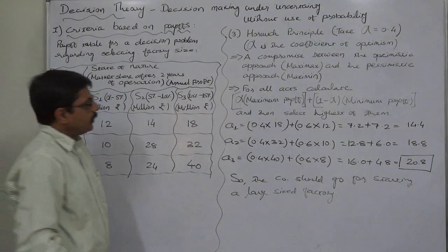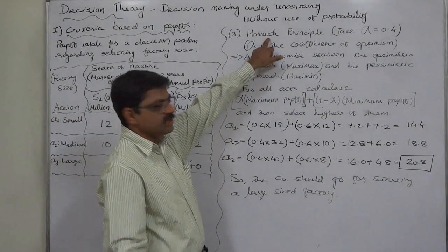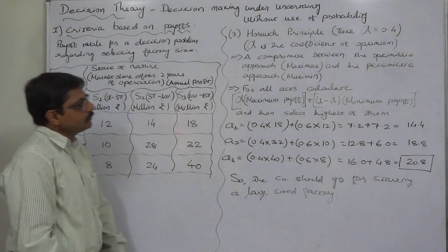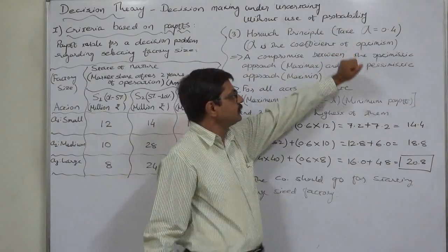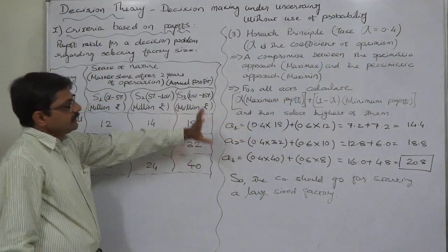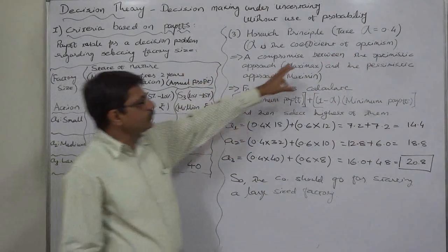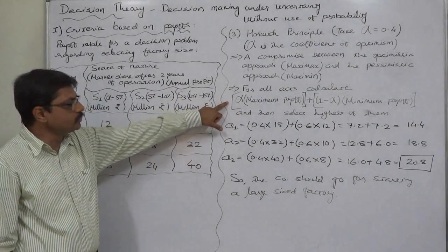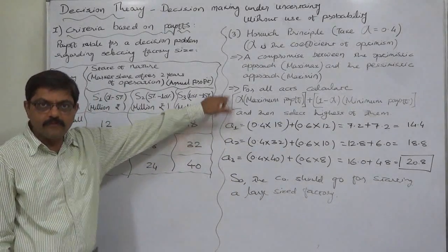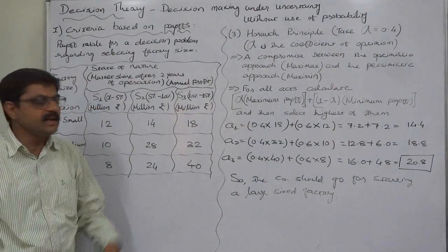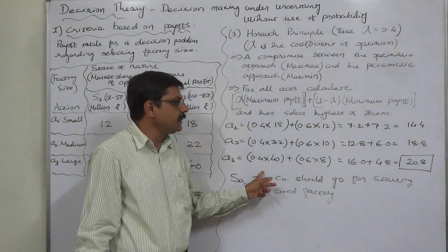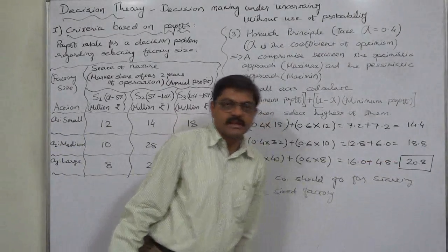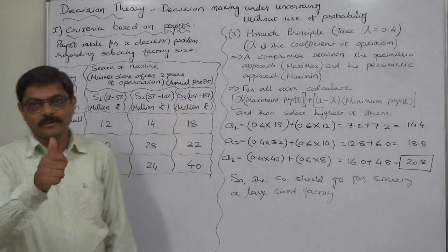So this was the Hurwicz principle where we need to use alpha, the subjective probability that is also known as the coefficient of optimism. This is the formula to be used to calculate the expected payoff of all the actions, and ultimately at the end we need to select the action with the highest such expected payoff. That's it, thank you very much.